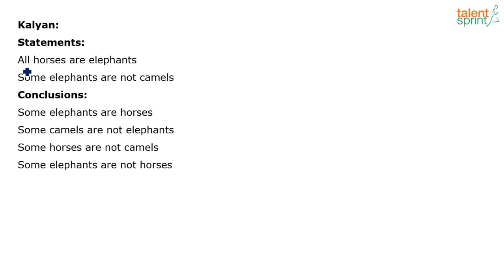Here are the statements. All horses are elephants. Some elephants are not camels. Be careful — this is a 'some not' type of statement.